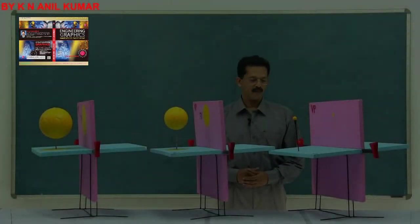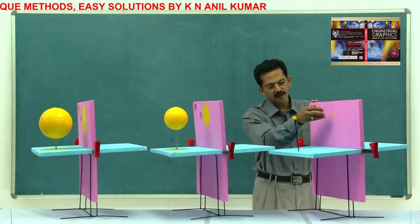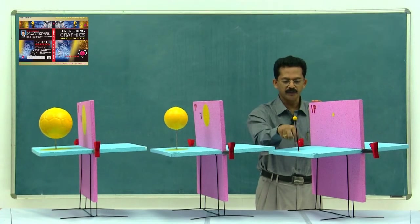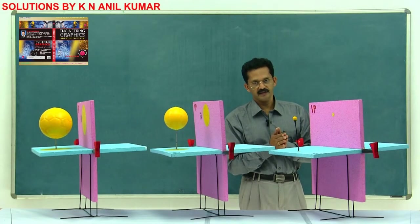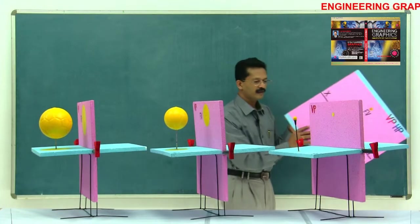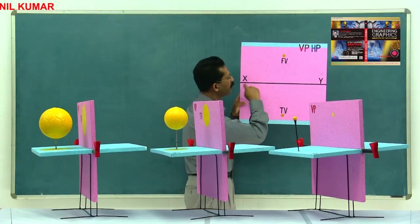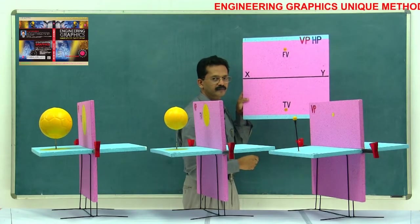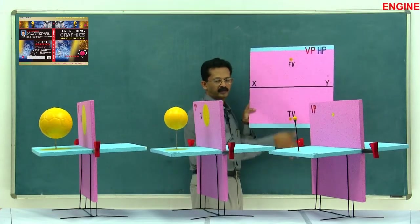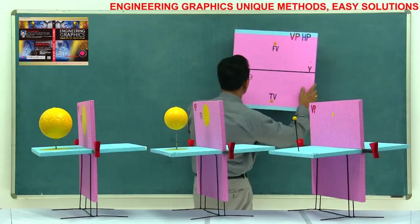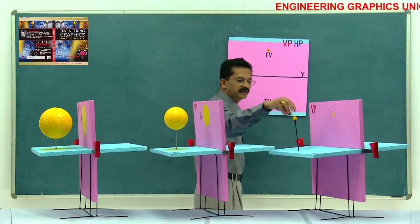To understand the concept of XY, consider three cases. First, a small ball or sphere — when projected onto the vertical plane you get the front view, and onto the horizontal plane you get the top view. After getting these projections on the respective planes, you relatively rotate the planes so they coincide. Then you get the front view and top view on the board, with XY as the dividing line.